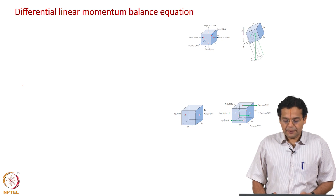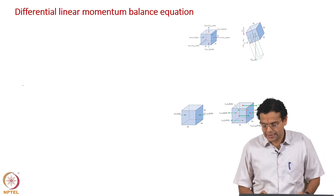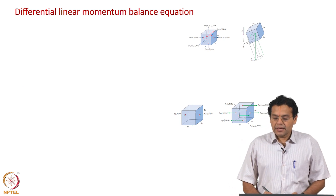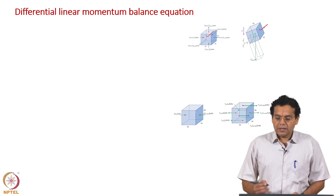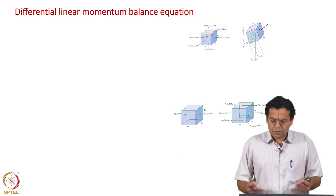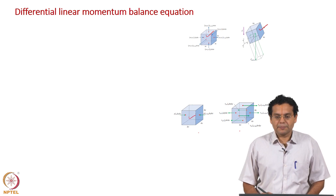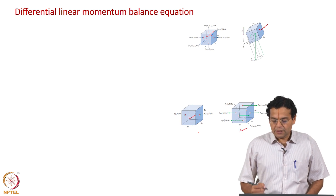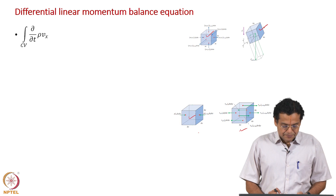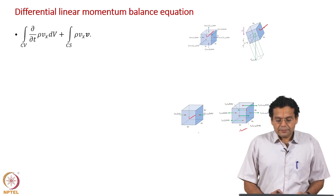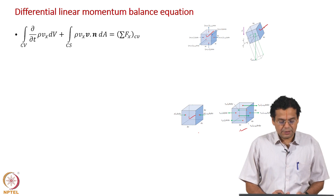Let us put together all of them. We are seeing here 4 control volumes in terms of the scale. The first control volume takes care of the convective momentum, the second control volume accounts for the body force, and then we have two separate control volumes shown very clearly separately. The third represents surface force due to pressure, the fourth represents surface force due to viscous stresses.